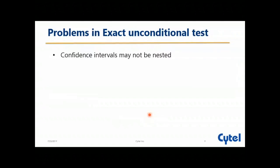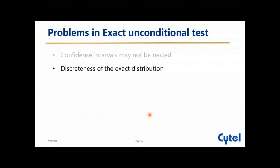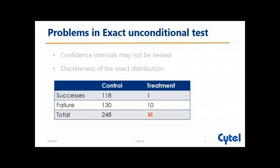Another important problem of the exact unconditional test is that confidence intervals may not be nested. We expect that the 95% confidence interval will be larger than the 90% confidence interval, which always happens in asymptotic theory. But that may not happen in the exact case, particularly with unconditional exact tests. The second problem is the discreteness of the exact distribution. As we have seen, there were only five points in the first example — it is not a continuous bell-shaped curve, it is a discrete distribution, so in graphs you will see steps rather than a smooth curve.